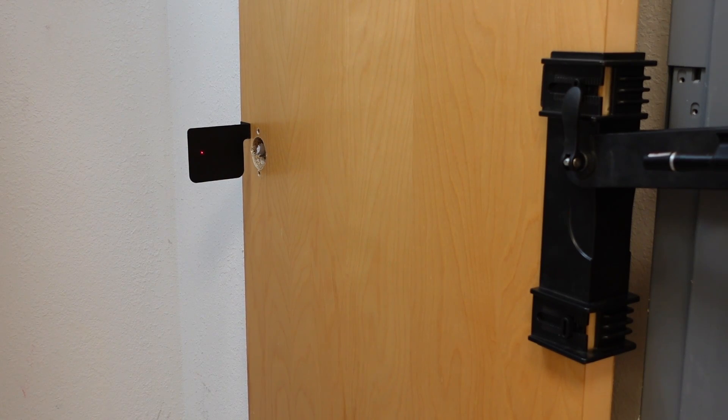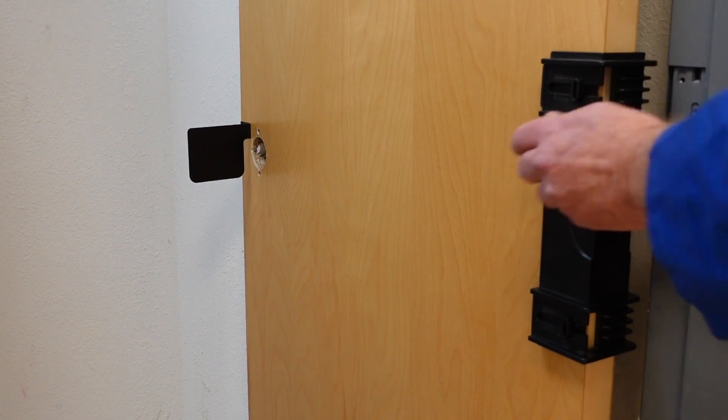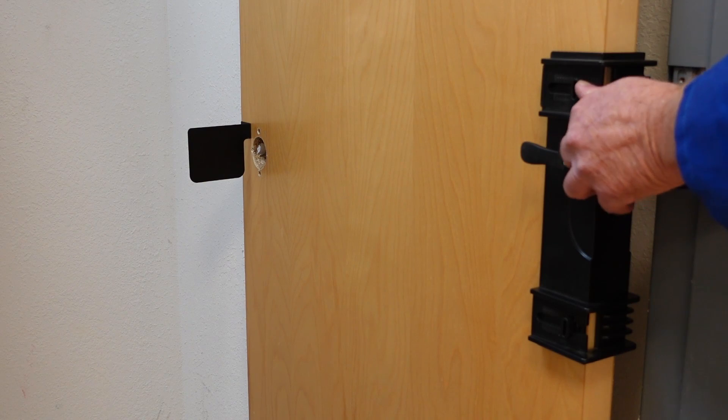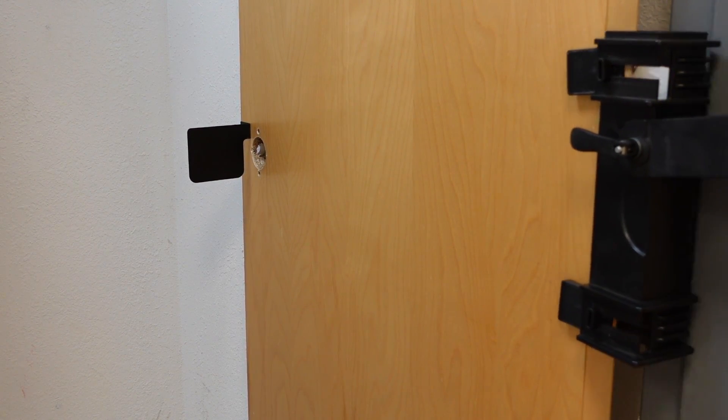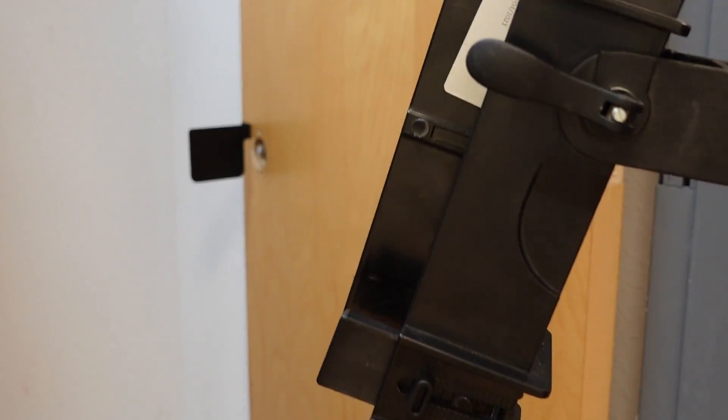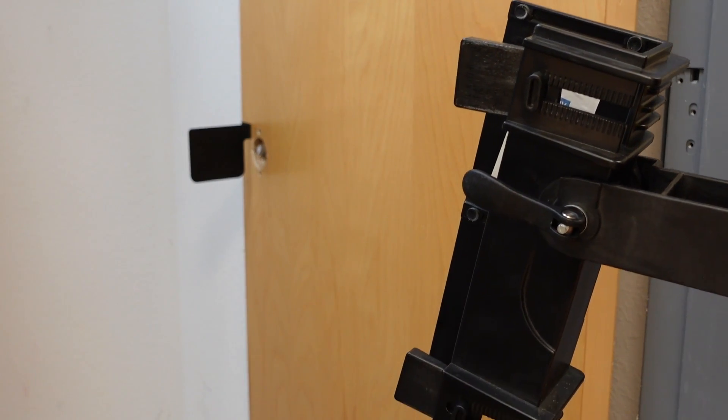Now removing the fixture from the door is also very easy. Place your hand down here to remove the laser. Pull this out. Pull it in towards you. Push this up. It takes it right off. You're all set. To take the drill bit off the door, these little knobs right here, push forward, push forward, and you're off the door just like that. Very simple. Very quick. Very easy to use. Have fun.